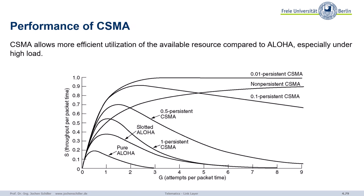CSMA is a basic scheme, but different variants — whether we immediately send after idle, or continuously sense, or not — lead to different performance. Schemes sending with certain probabilities or non-persistent approaches have quite good behavior, where classical pure or slotted Aloha breaks down at around 18% and 36% respectively. CSMA variants can come close to 97-98% utilization, making much more efficient use of the medium.